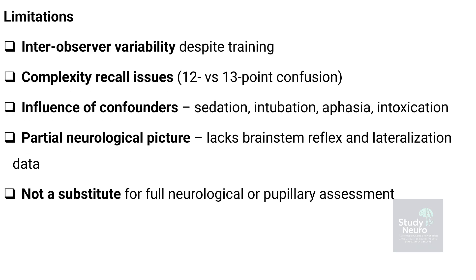While the Glasgow Coma Scale is invaluable, it isn't without limitations. There's often inter-observer variability, even among trained professionals, leading to scoring inconsistencies. Some struggle with recall of its complexity, particularly the 12–13 point confusion in older versions. Scores can be influenced by confounding factors such as sedation, intubation, aphasia, or intoxication, which may obscure true neurological status. The GCS also provides only a partial neurological picture, as it doesn't assess brainstem reflexes, lateralizing signs, or pupil reactions. Most importantly, it's not a substitute for a comprehensive neurological or pupillary examination.